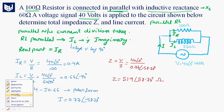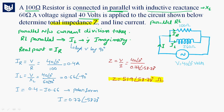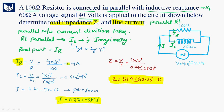So to summarize the answers: the total impedance Z is 51.9∠58.78° ohms, and the line current I is 0.77∠-58.78° amperes. IR, the current through the resistance, is 0.4 amperes, and IL, the current through the inductor, is 0.66 amperes. Thank you.